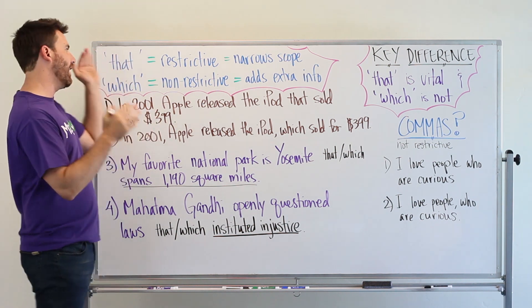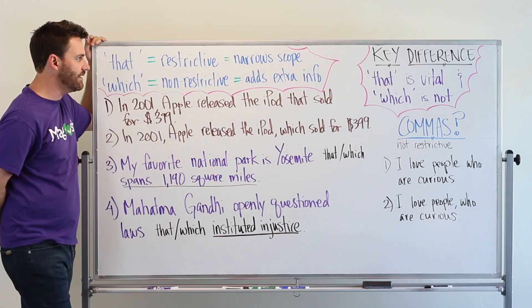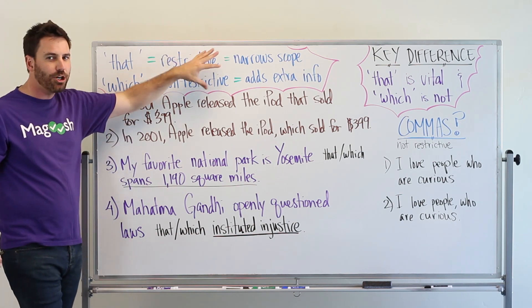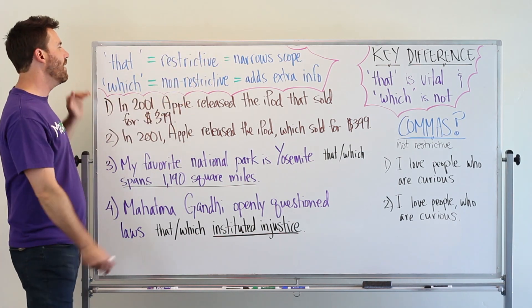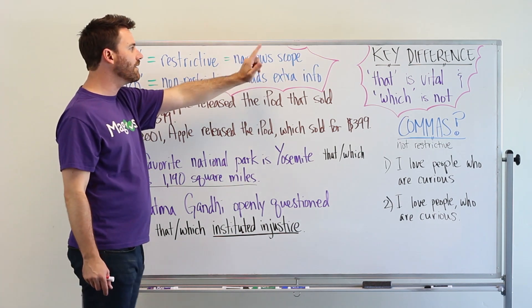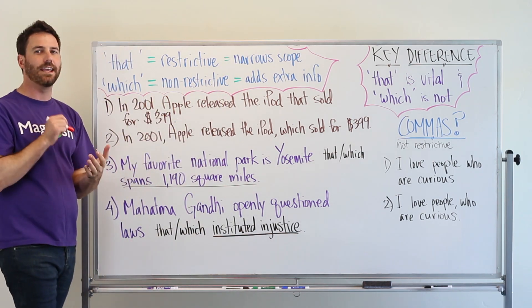At the very beginning, that is used for restrictive clauses and which is used for non-restrictive clauses. These are grammar terms. You don't really have to know these. It's just good to keep track of, but really when we use that we're narrowing the scope. It narrows the scope of the noun that it's describing.